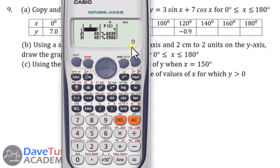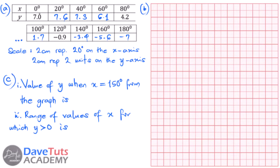If you are consistent, you get the complete table of values computed to one decimal place, in consistency with the given values of 7.0, 4.2, and -0.9. We are given the scale as 2 centimeters to represent 20 degrees on the x-axis, and 2 centimeters to represent 2 units on the y-axis. We also need to find the value of y when x is 150 degrees, and the range of values of x for which y is greater than zero.